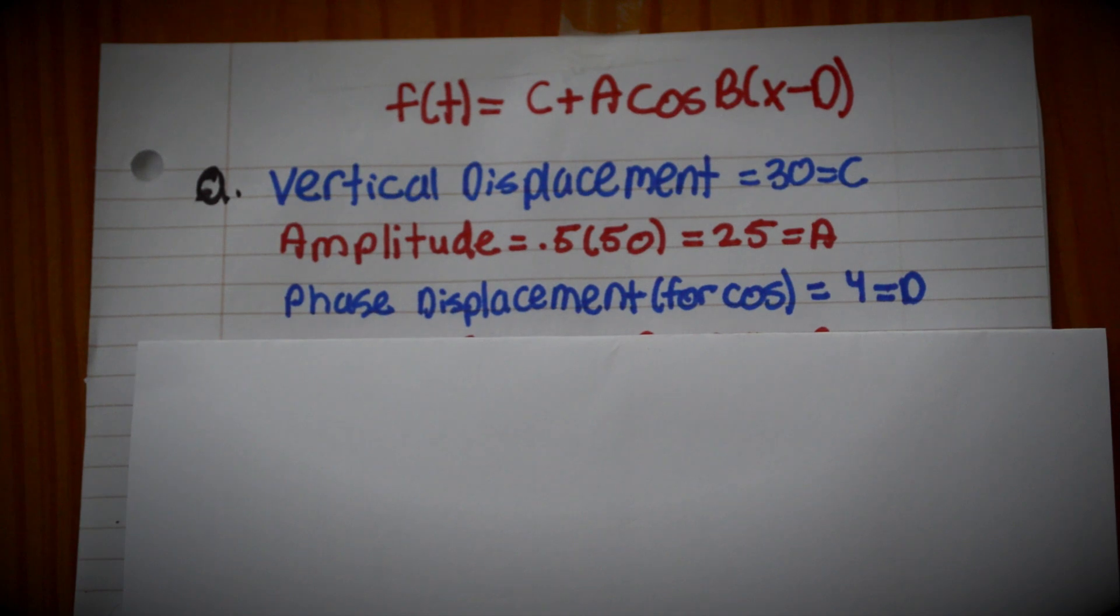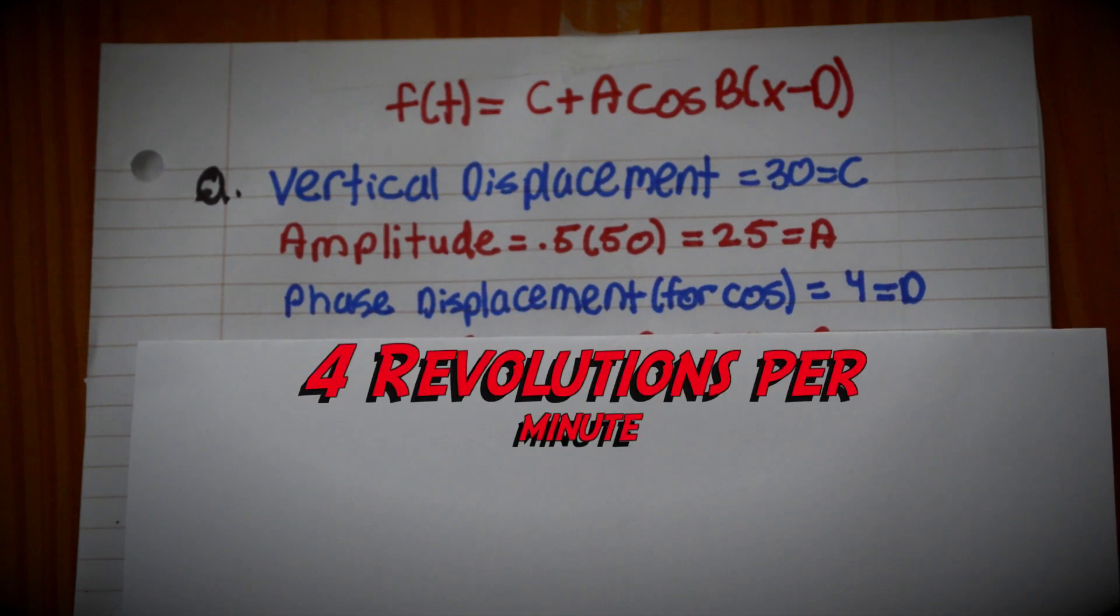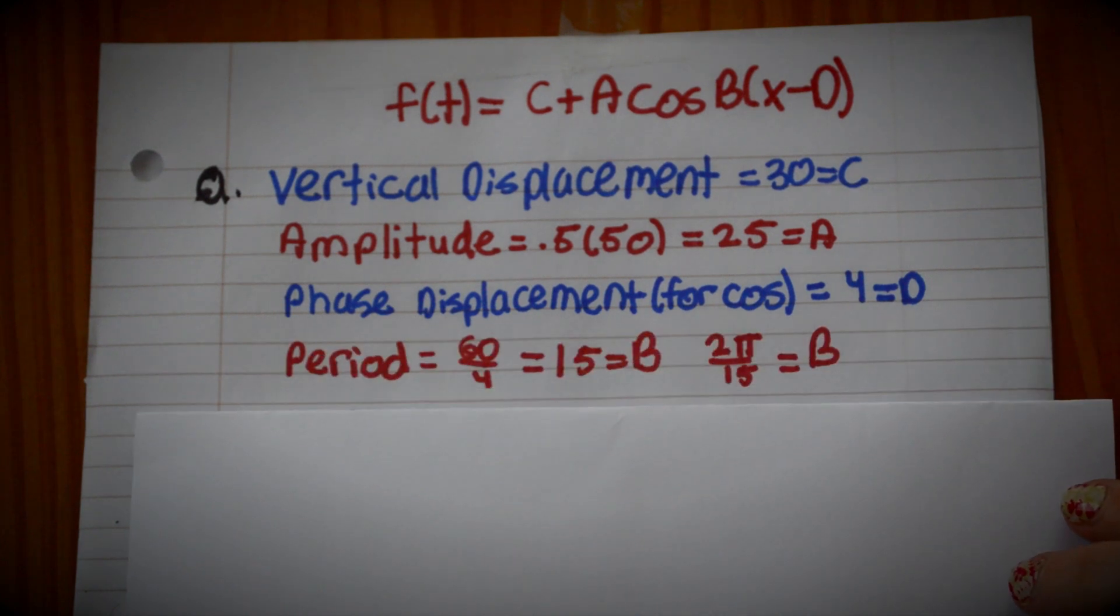The phase displacement for cosine is 4, which is d, which is our revolutions per minute. The period is 60 over 4, and 4 is our revolutions per minute. That gives us 15, which is b, and we plug it into the period, which is 2π over 15 equals b.